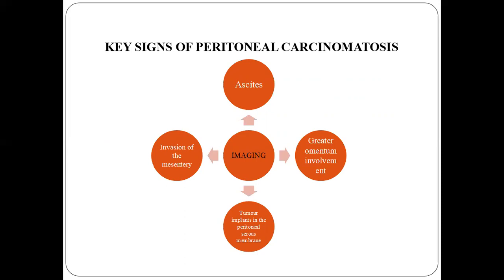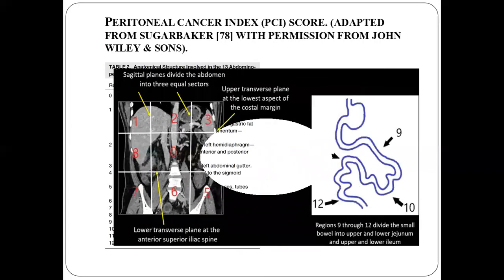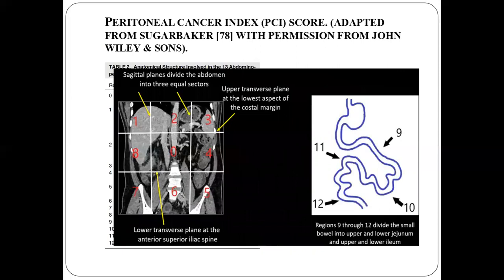Key signs of peritoneal carcinomatosis on imaging include ascites, tumor infiltration of the peritoneal serous membrane, and omental involvement. The peritoneal cancer index assesses CT accuracy in detection of peritoneal metastasis, with peritoneal deposits noted on each of the nine segments of the abdomen and pelvis in the coronal image, including the upper and lower jejunum and upper and lower ileum as four additional segments.